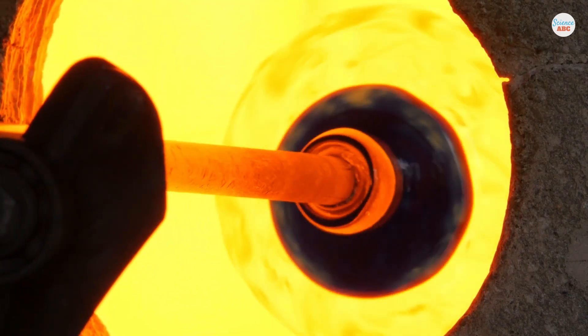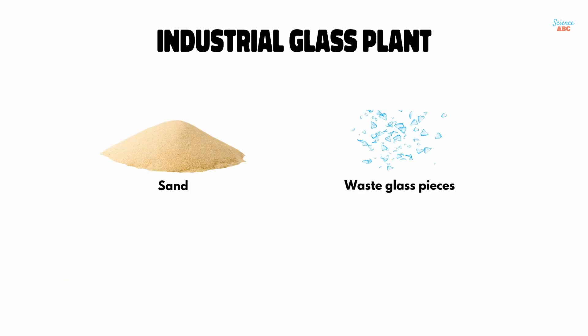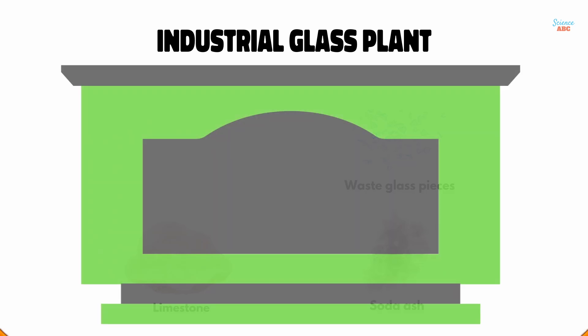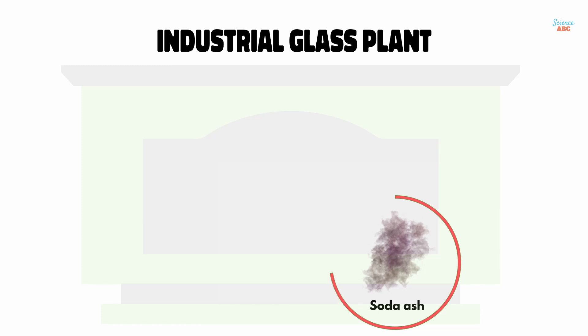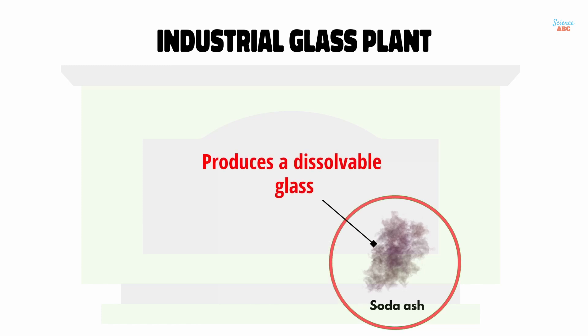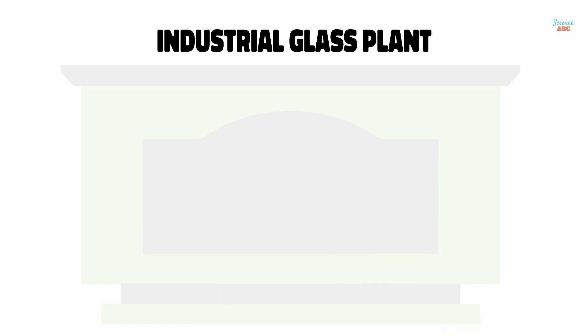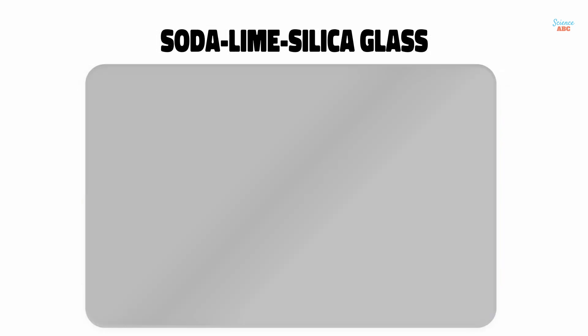Now that you understand the basics of making glass, let's look at how glass is made in an industrial situation. In an industrial glass plant, sand is mixed with waste glass pieces, often collected from recycling, limestone and soda ash, before being heated in a furnace. The soda ash is added to reduce the sand's melting point, in a bid to save energy in the manufacturing process. However, this also has an unwanted side effect — it produces a type of glass that would dissolve in water. To counter this, limestone is added to the mixture. The end product obtained is called soda-lime silica glass, which is the general purpose glass we commonly see around us.